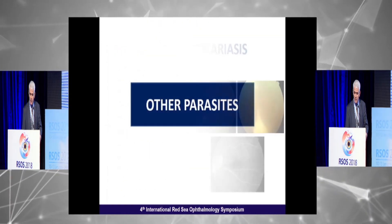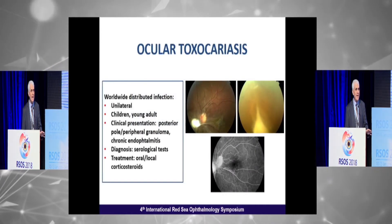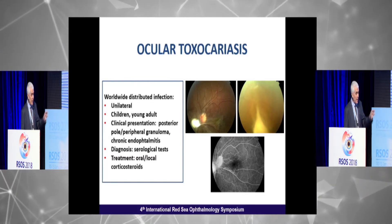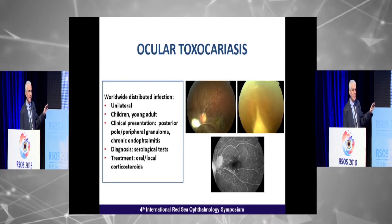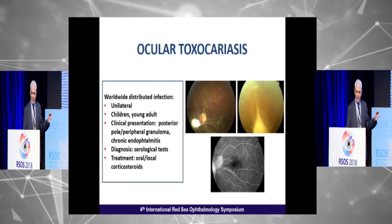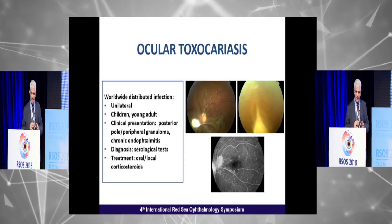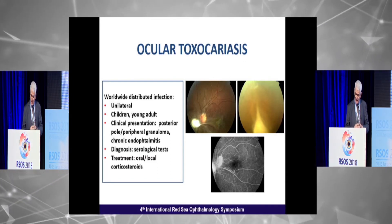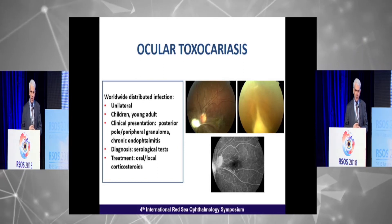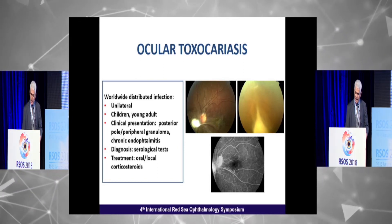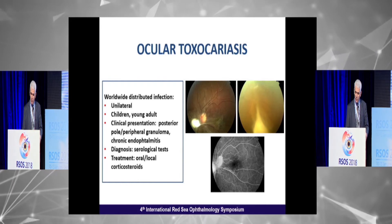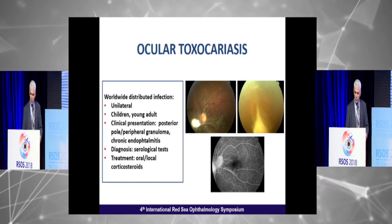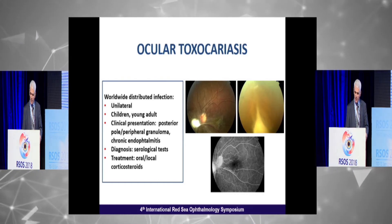Moving briefly to other parasites: Toxocara — the diagnosis is mainly based on clinical features. The presence of a single retinochoroidal granuloma is typically associated with vitreous traction. The granuloma may involve the posterior pole or the periphery, and some patients may present with chronic endophthalmitis.